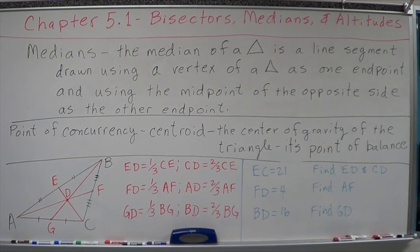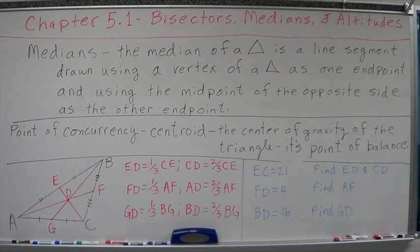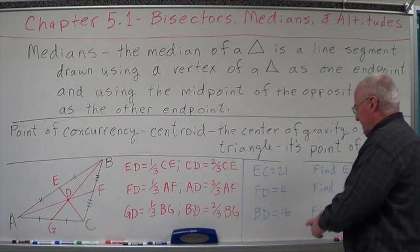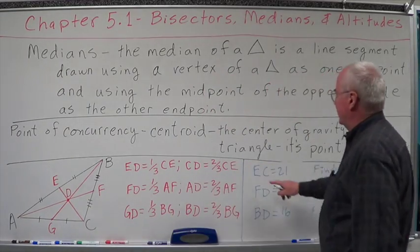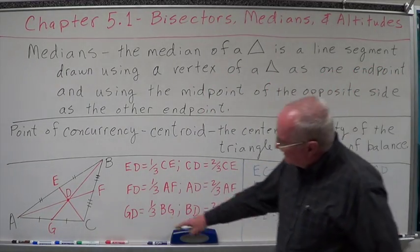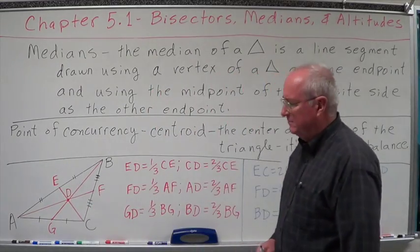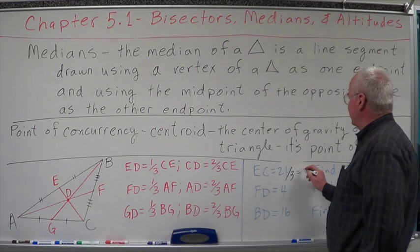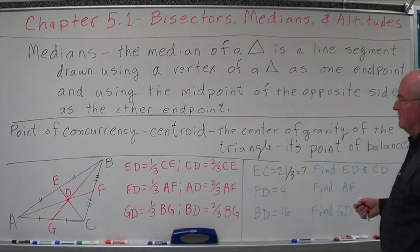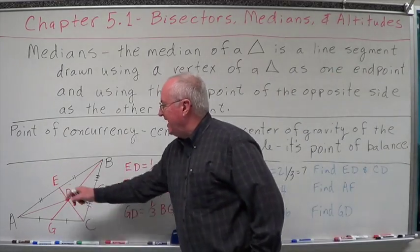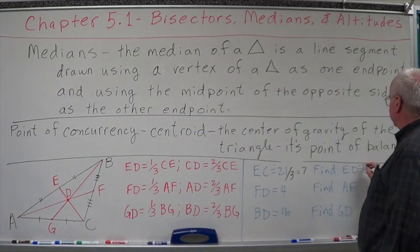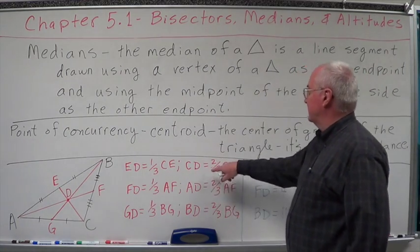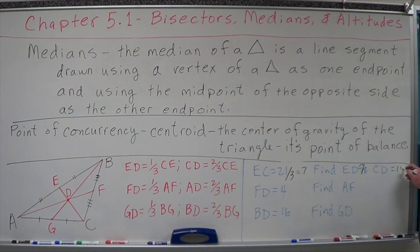Let's work with this and see what we can do with it. EC equals 21. Well, EC is the entire median, isn't it? It's the thing we want to divide by thirds. So we divide it by 3 and we equal 7. So one-third of it, ED, the part to the side, is going to be 7. The other part is going to equal twice that, two of them, so this is going to be 14.